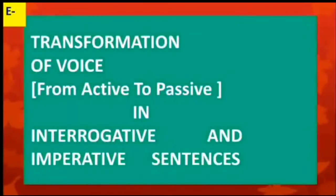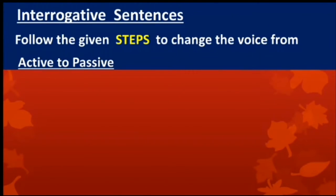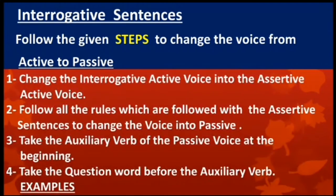We have learnt how to change the voice of assertive sentences from active to passive. Let's learn how to do the same with interrogative and imperative sentences. For interrogative sentences, we follow these steps: first, change the interrogative active voice into the assertive active voice. In step 2, follow all the rules used with assertive sentences. In step 3, take the auxiliary verb of passive voice at the beginning. In step 4, if we have a question word, we take it before the auxiliary verb.